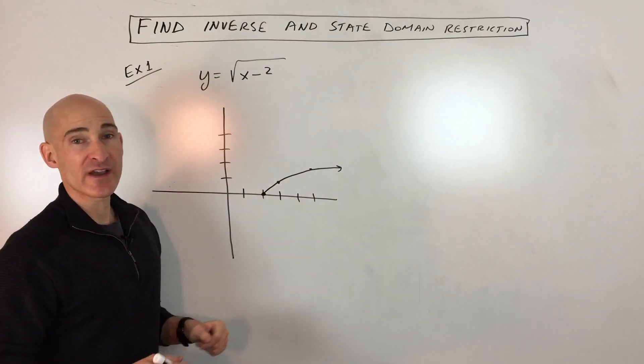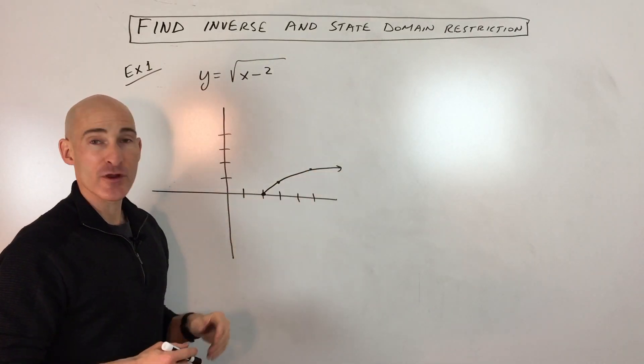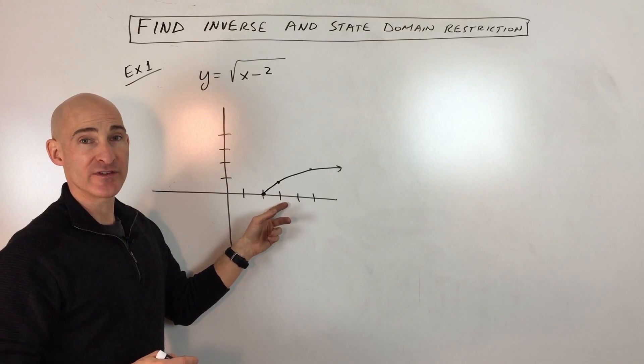So say, for example, we have y equals square root of x minus 2. So this is the graph here. We want to find the inverse of this graph.